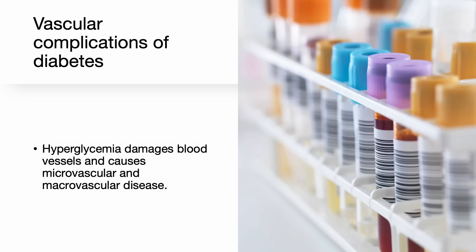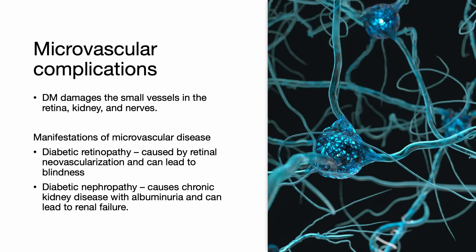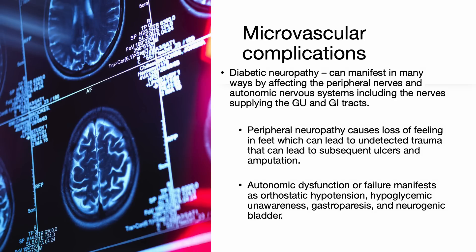Hyperglycemia damages blood cells and causes microvascular and macrovascular disease. Diabetes damages the small vessels in the retina, kidney, and nerves. The manifestations of microvascular disease include diabetic retinopathy, caused by retinal neovascularization and can lead to blindness; diabetic nephropathy, which causes chronic kidney disease with albuminuria and can lead to renal failure; and diabetic neuropathy, which can manifest in many ways by affecting the peripheral nerves and autonomic nervous system, including the nerve supply in the GU and GI tracts.